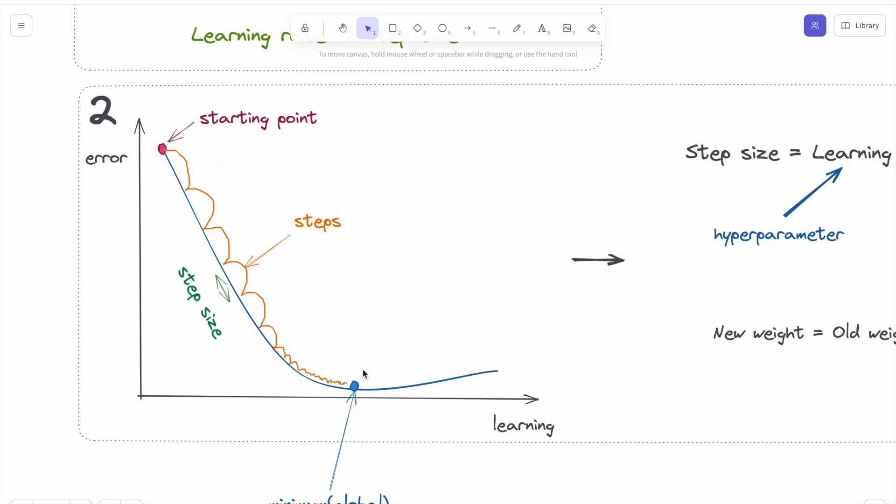From the starting point to the global minimum point, the model step by step will update its weights, and the size of the step depends on the learning rate and also the slope of this gradient. I will not give too many details about the slope, but remember if you want to find the slope of a function, you need to calculate its derivative.